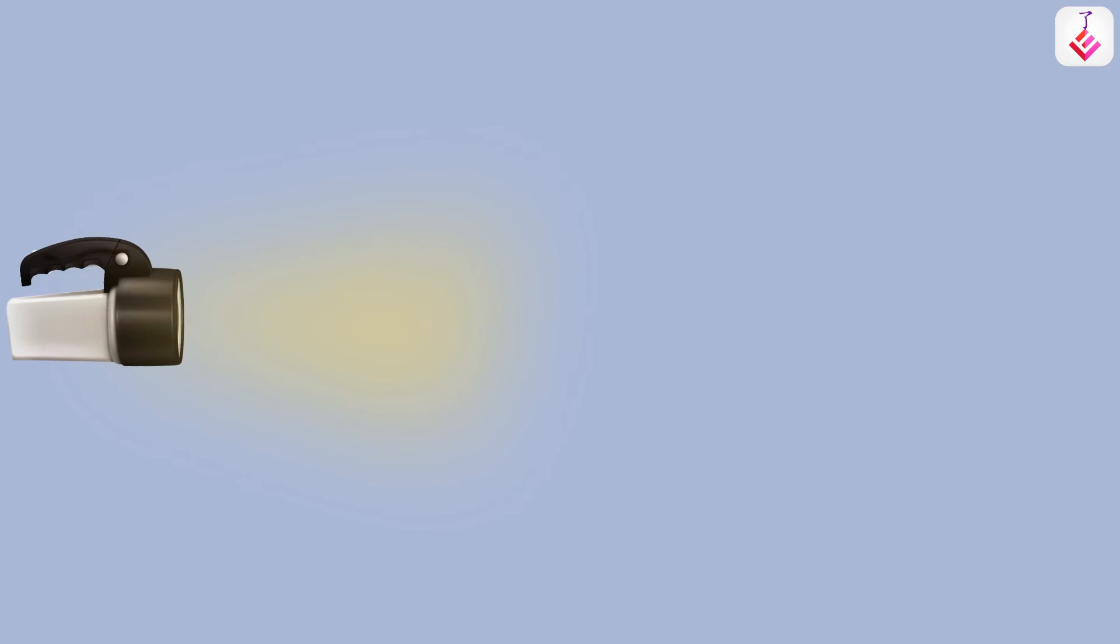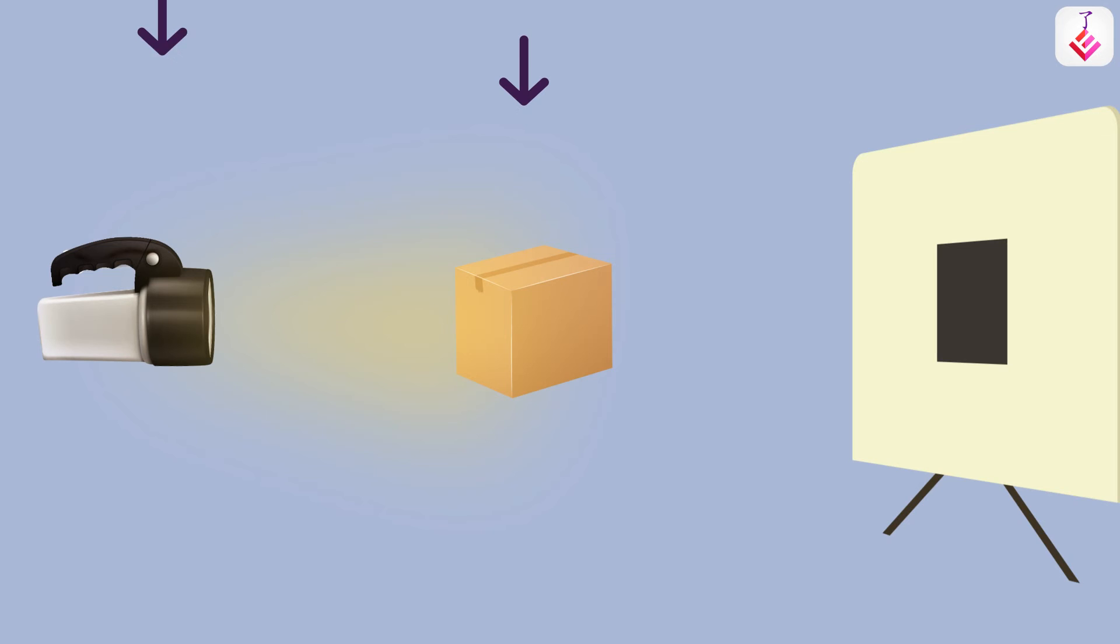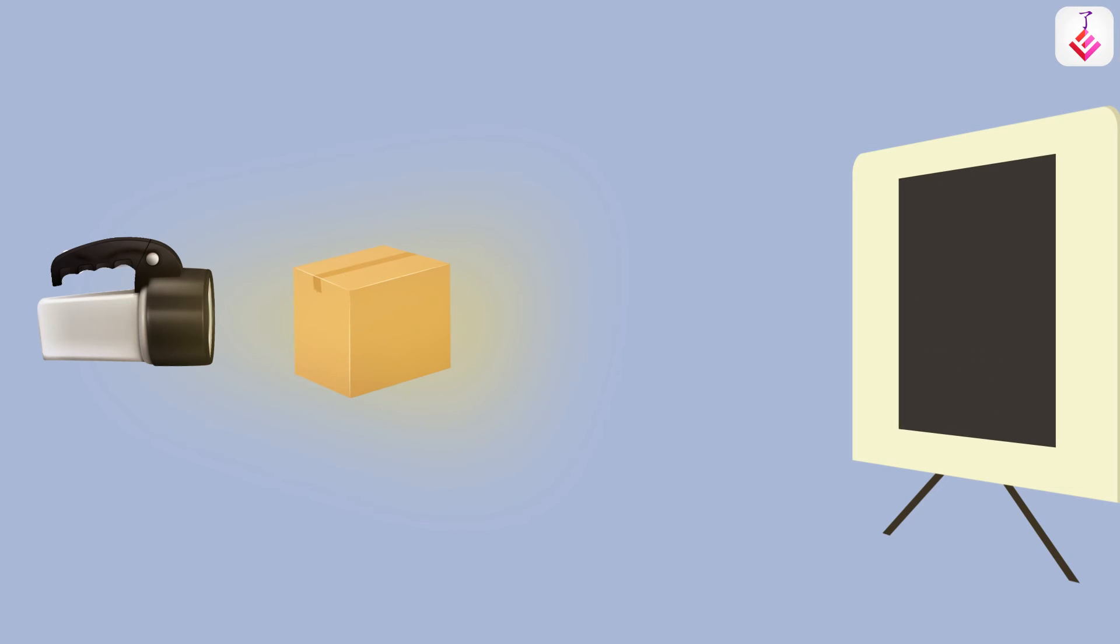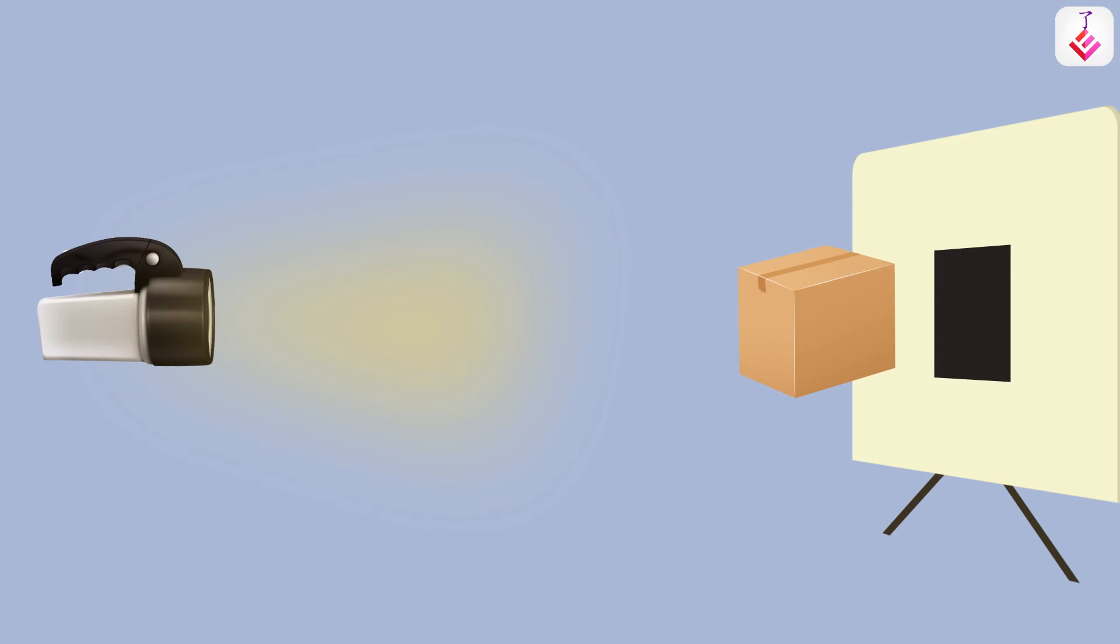The size of an object's shadow depends on the positions of the object, the light source, and the screen. Here, the box is placed closer to the light source, or further from the screen, and we can see the shadow is bigger. Now, let's move the box closer to the screen or further away from the light source. Now the shadow is smaller.